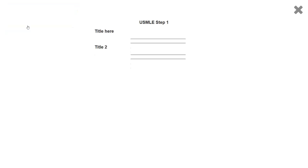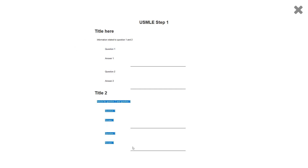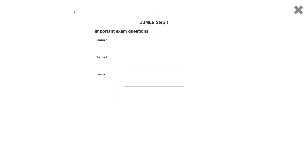This other option is the reverse: it shows the articles first, then the questions related to those articles. The questions may repeat themselves across articles. Note that questions not linked to any article won't be shown here, and articles not linked to any question won't be shown here either.